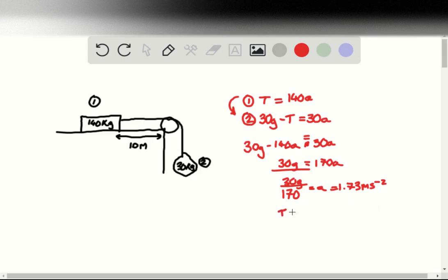And then we take tension. Tension we already have an equation for. It's just equation 1 up here. 140 multiplied by the value for a that we already have, the one that we've determined. And popping this into a calculator gives us a value of 242 newtons.